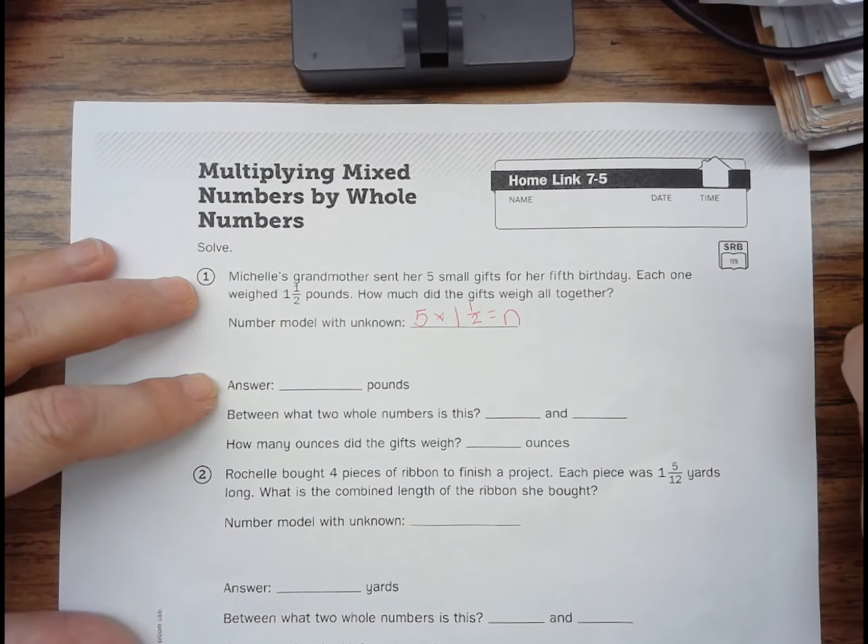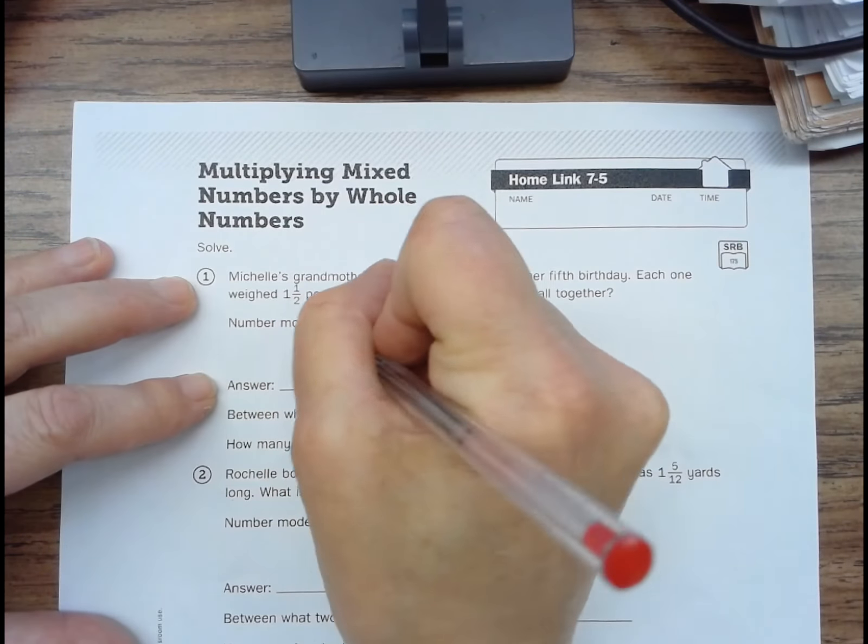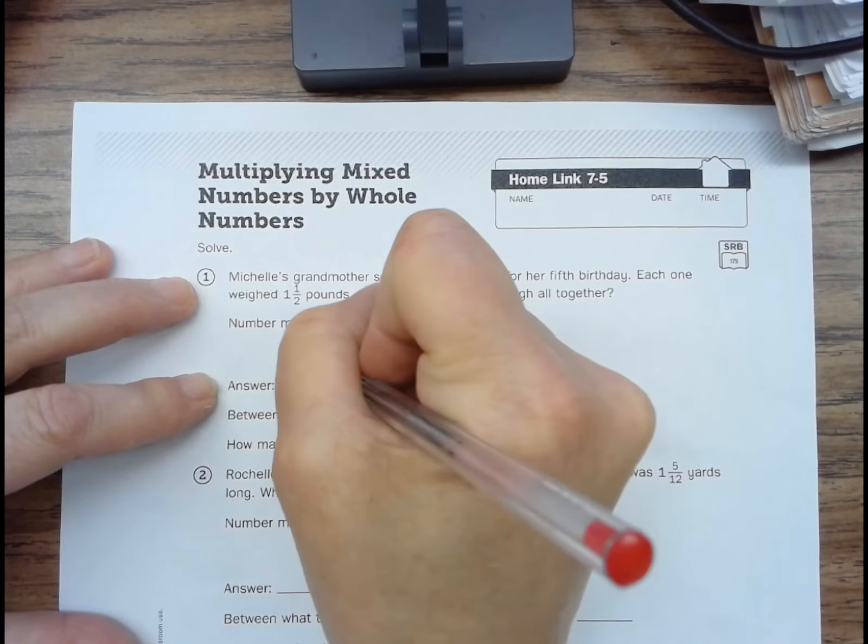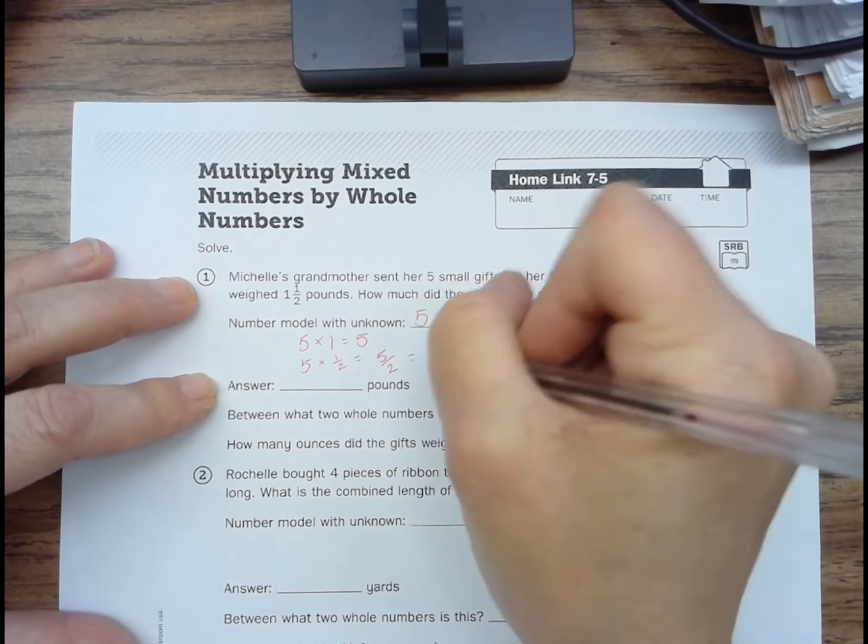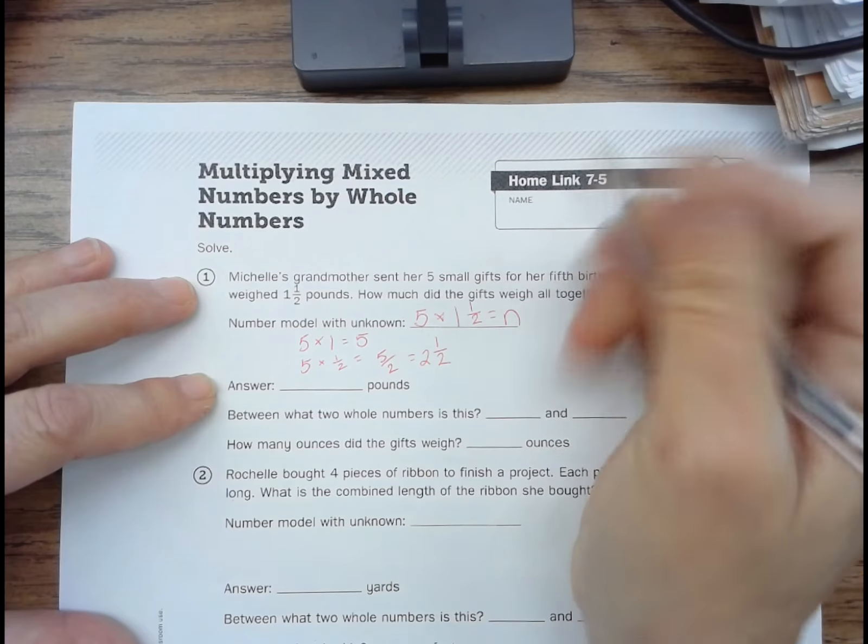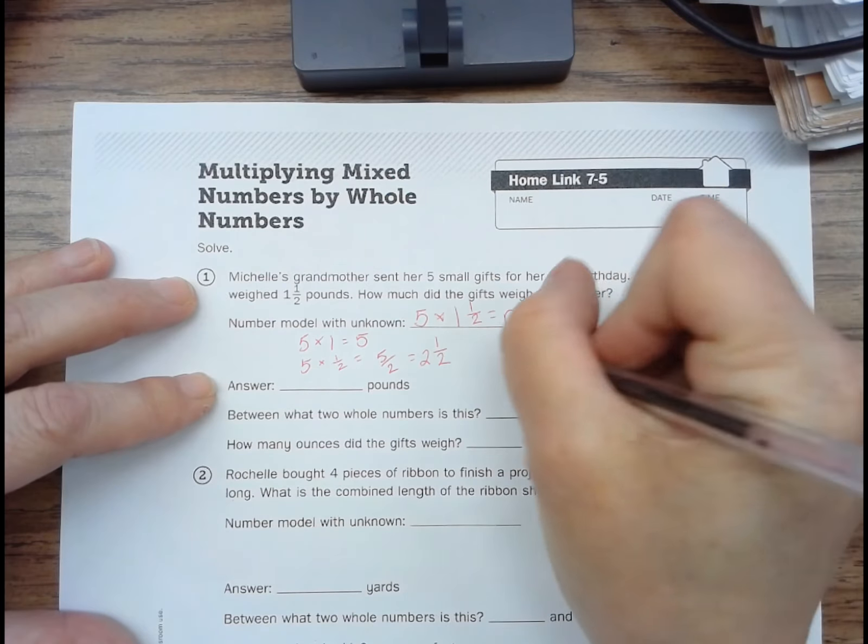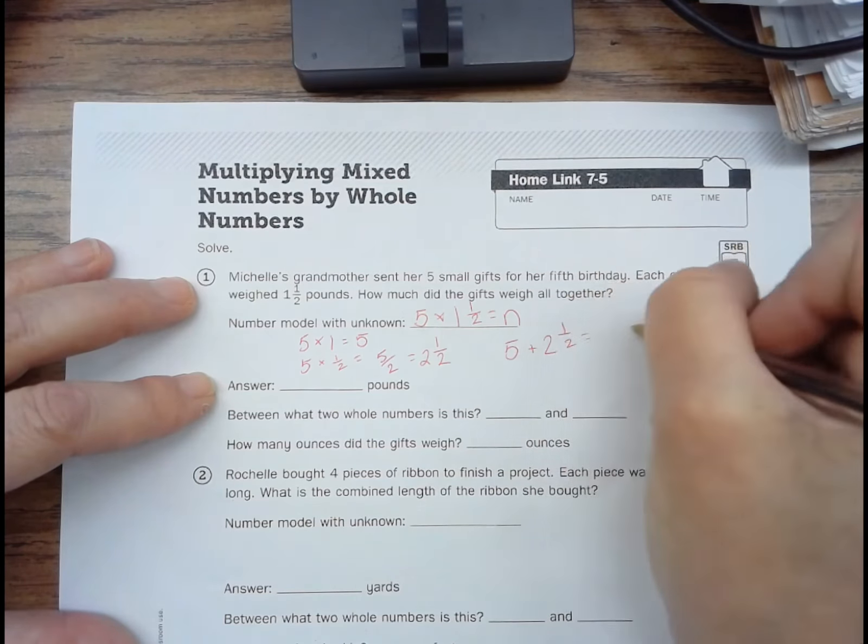When we're doing our multiplication, five times one is five. Five times one and a half equals five halves, which equals two and one half. So then we add five plus two and a half, which gives us seven and a half. And that is the answer. Seven and a half pounds.